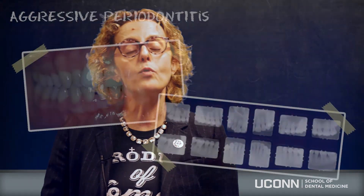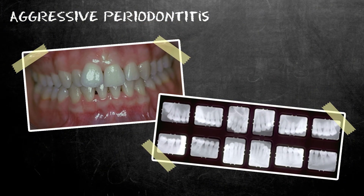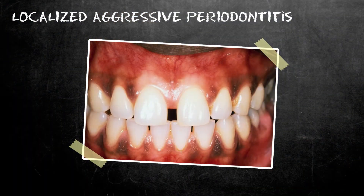Aggressive periodontitis occurs in patients otherwise healthy and is characterized by very rapid attachment loss and bone destruction. It presents with familial aggregation. Patients with aggressive periodontitis usually exhibit an amount of microbial plaque inconsistent with severity of the disease. There are two forms: localized, with defects present in the incisor and first molar and prevalent in puberty, and generalized, present throughout the mouth in patients 30 years old or younger.